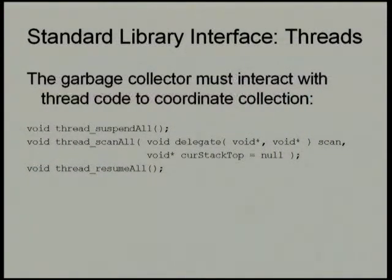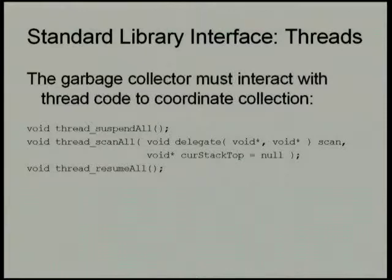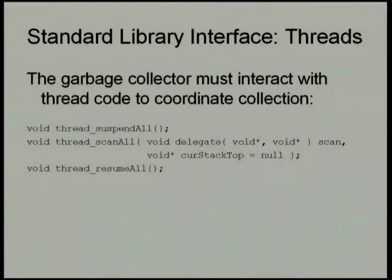Because we're splitting this out, the garbage collector has to work together with the thread library to stop the world at the beginning of a collection, run the collection, and start things up again at the end. Rather than importing thread and calling thread.suspend directly, we define extern C functions to do the same thing without compile-time dependencies. There are three functions: one to suspend all threads, one that passes a delegate internal to the garbage collector to mark everything, and one to resume all threads.